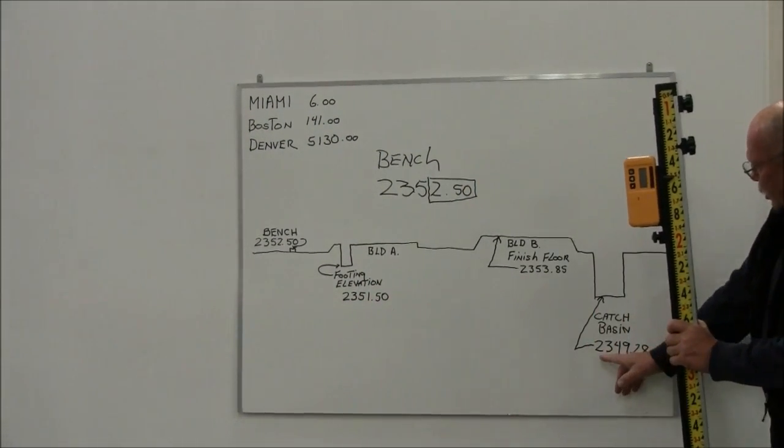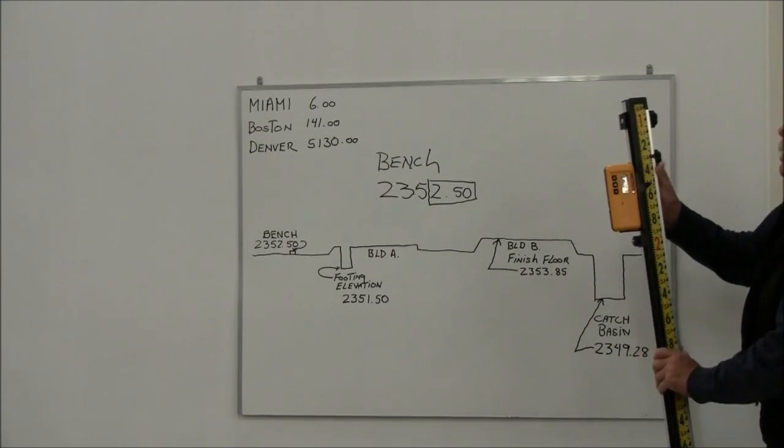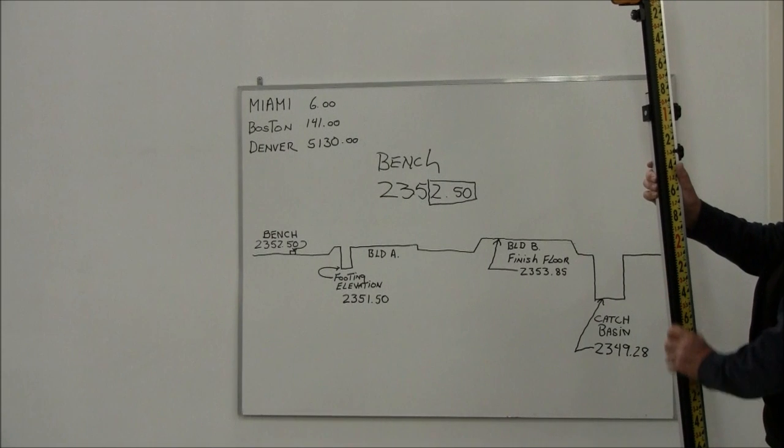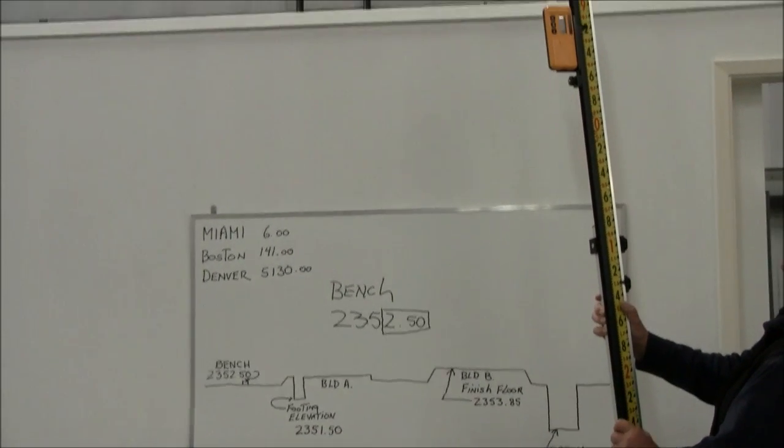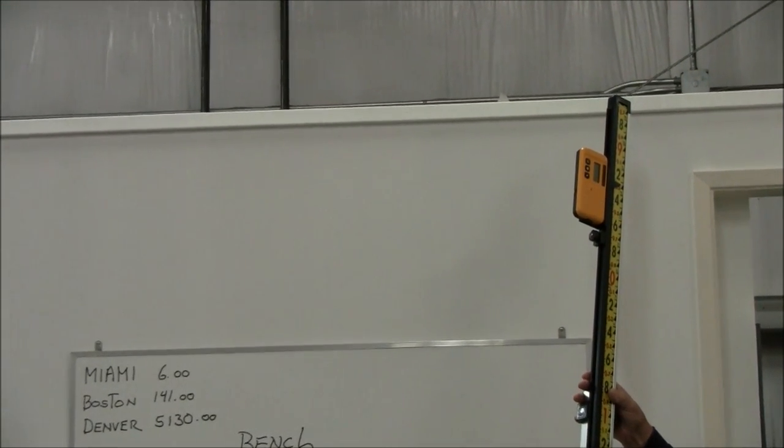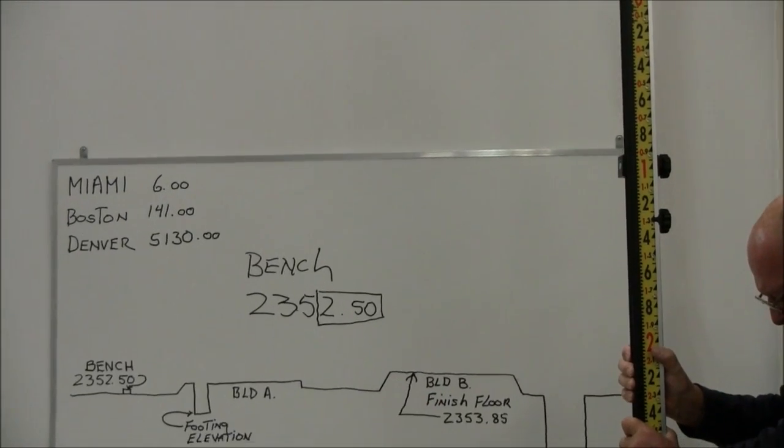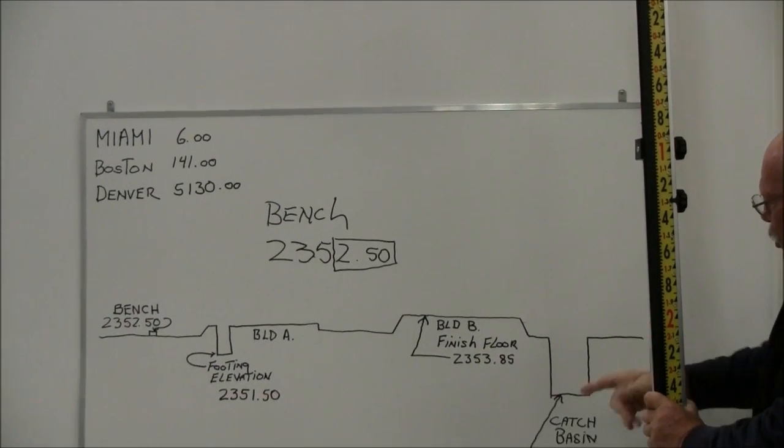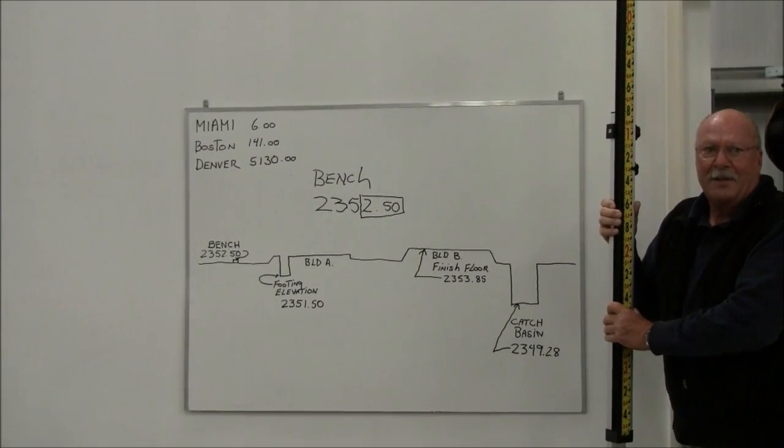Same thing with a catch basin, 2,349.28. What I would do is run the rod to 9.28. There's 9, 25, 28 right there. So as I dig down, when I pick up the steady tone and the bottom of my rod is at that point, I'm at that elevation.